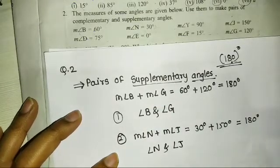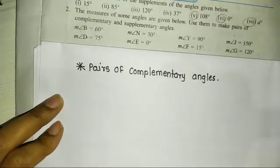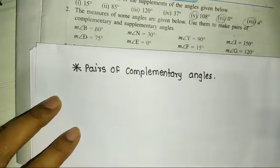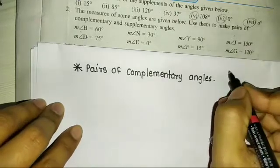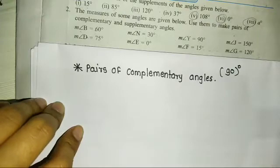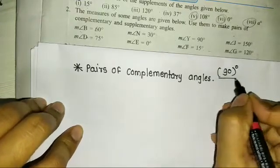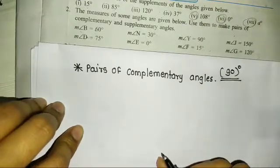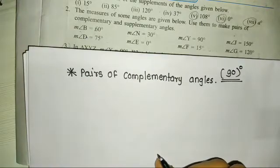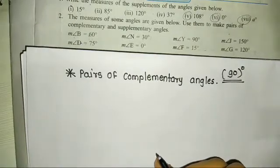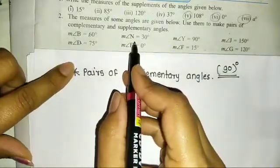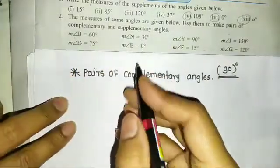Now we will do complementary angles — pairs of complementary angles. Complementary angles are made by two angles whose addition is 90 degrees. We will find out that the two angles whose measurement adds to 90 degrees. The measurement of angle B and measurement of angle N: 60 plus 30 is 90 degrees.